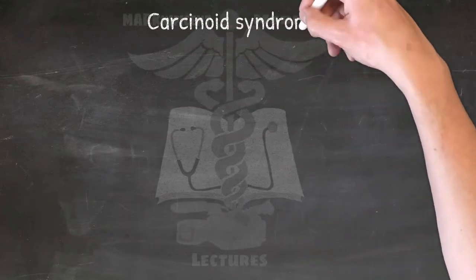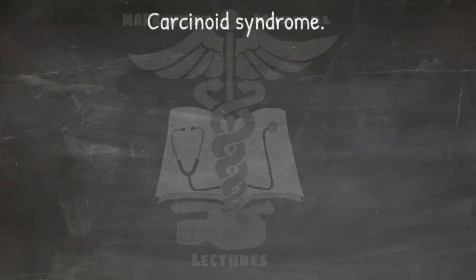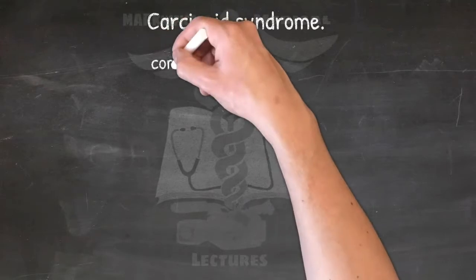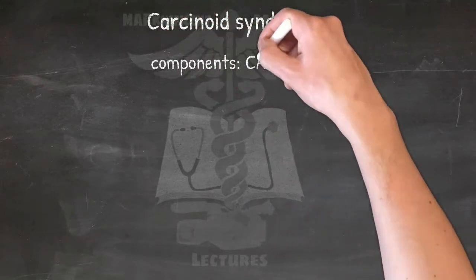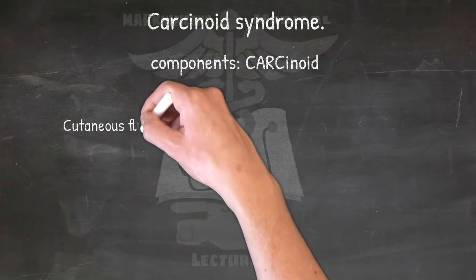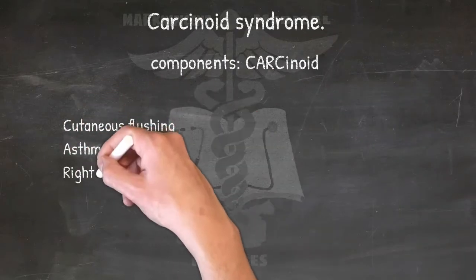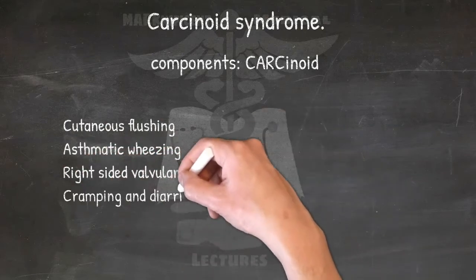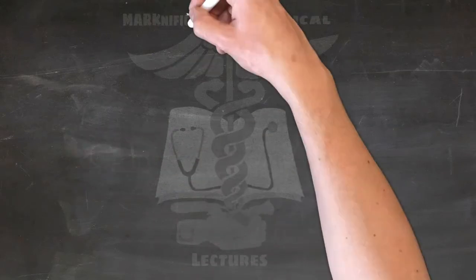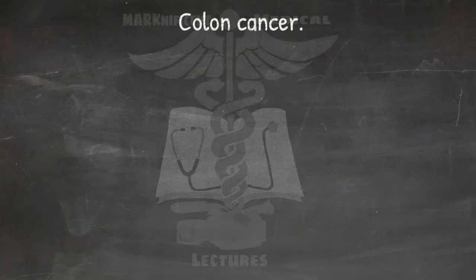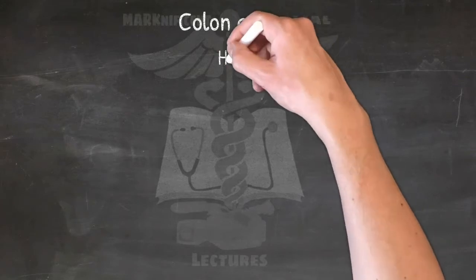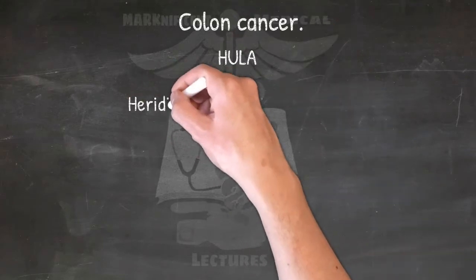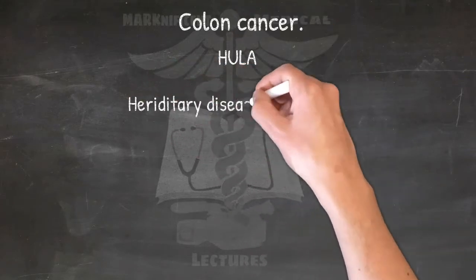Carcinoid syndrome: it is associated with carcinoid tumor secreting certain chemicals into the bloodstream. Components are remembered as CARCINOID: Cutaneous flushing, Asthmatic wheezing, Right-sided valvular heart lesions, Cramping and diarrhea. Colon cancer risk factors: HULA — Hereditary disease, Ulcerative colitis, Low fiber or high fat diet, and Adenomatous polyps.